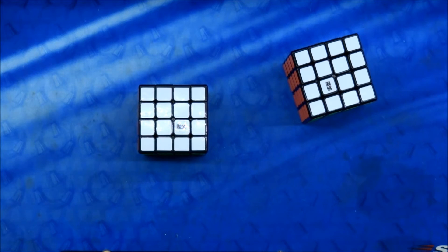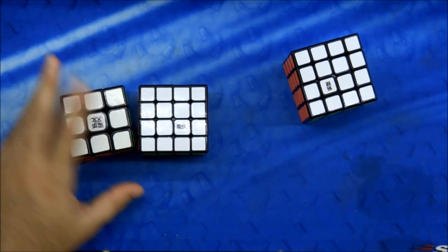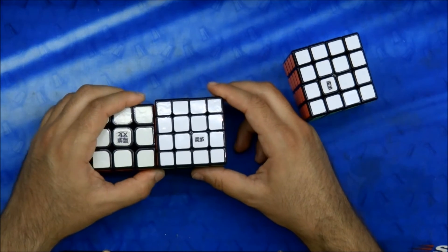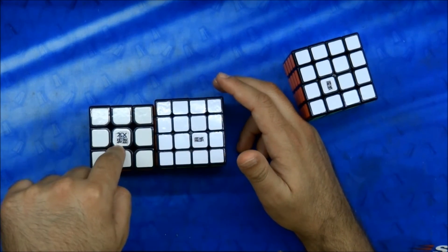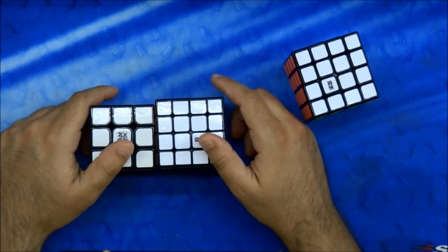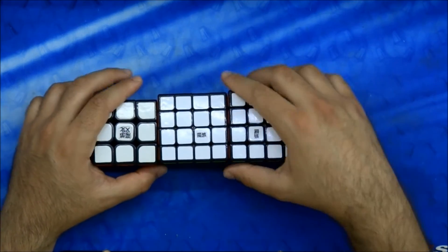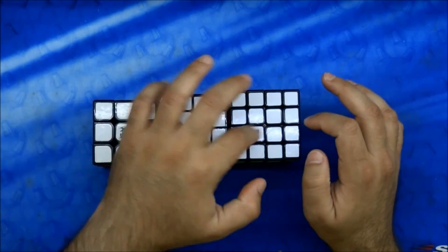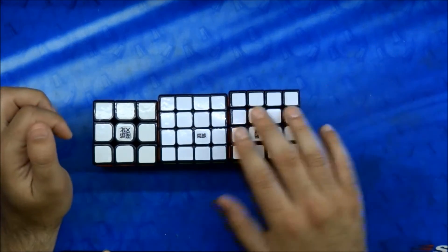And I have my actually my Moyu 3x3 right here, which is my main. See it's almost the same. If I'm not mistaken, this is 57 and this is 60, so it's pretty close. And this is 62. I mean, the small difference makes actually a lot of difference.